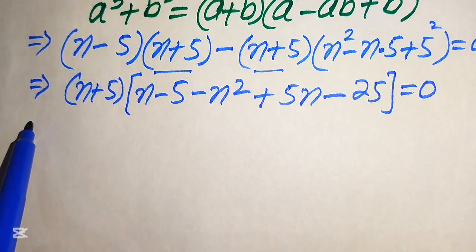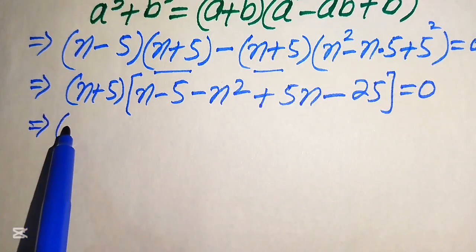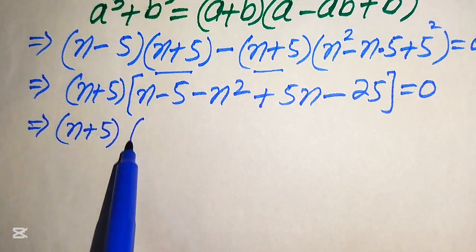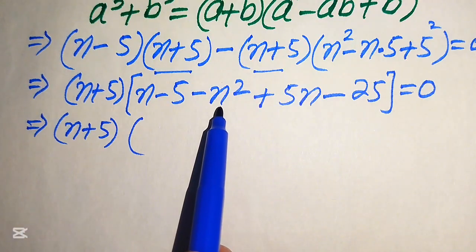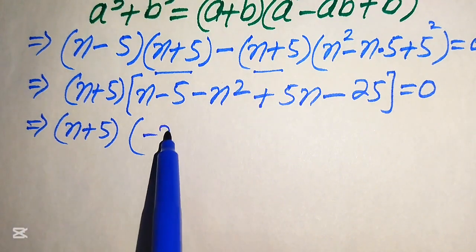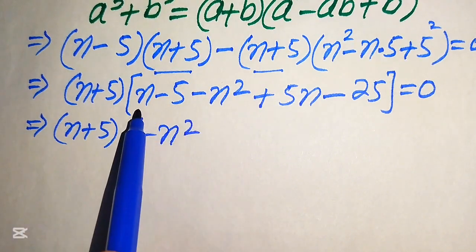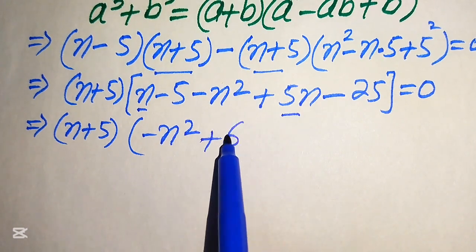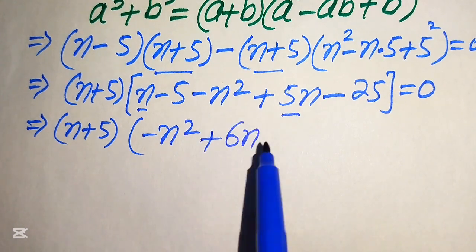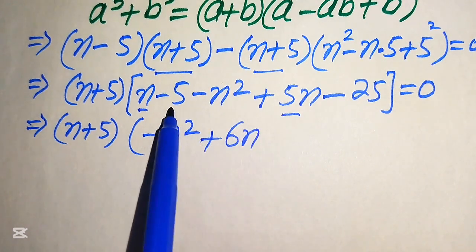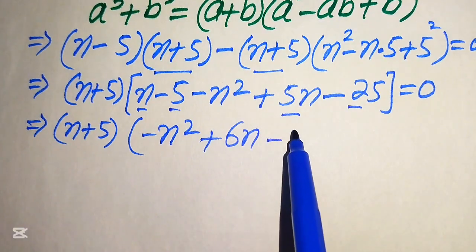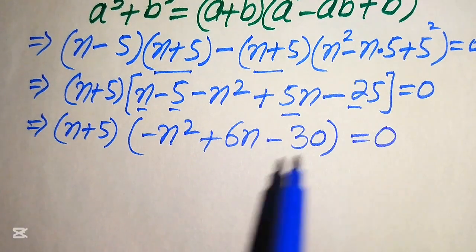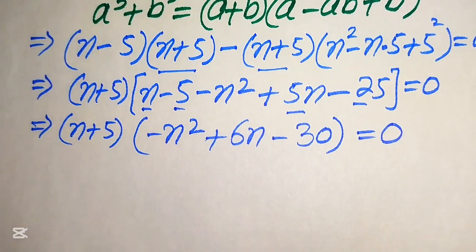We simplify by combining like terms. We have minus n squared, then n plus 5n equals 6n, and minus 5 minus 25 equals minus 30. So we have (n plus 5)(minus n squared plus 6n minus 30) equals zero.